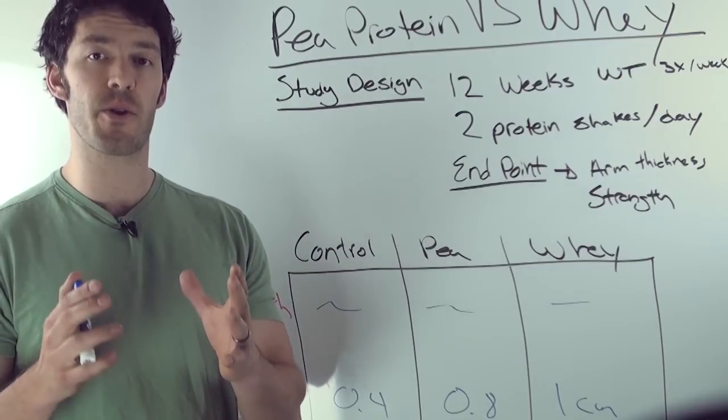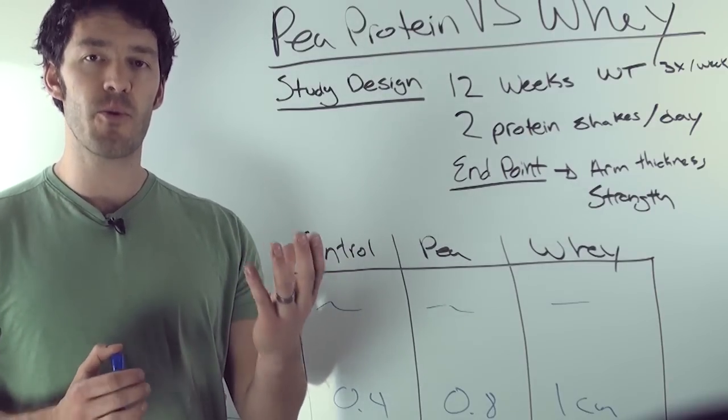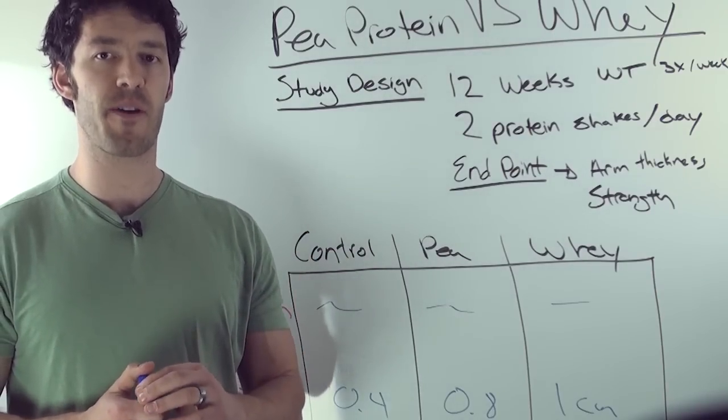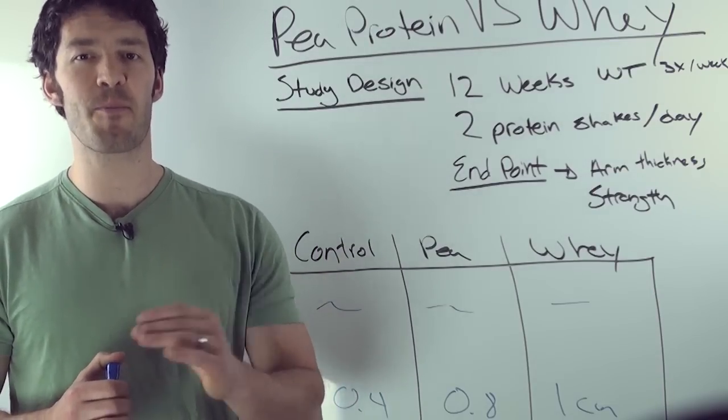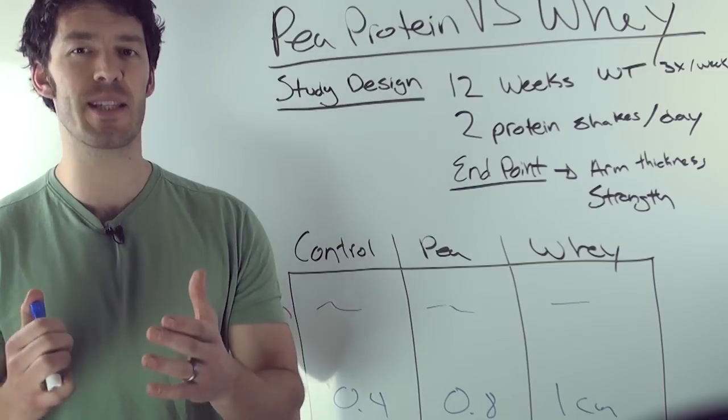But the key here is to make sure that when you're shopping for your proteins, that you look for high essential amino acid profile, particularly the branched chain amino acids. There's one amino acid that's very important, and that is leucine.